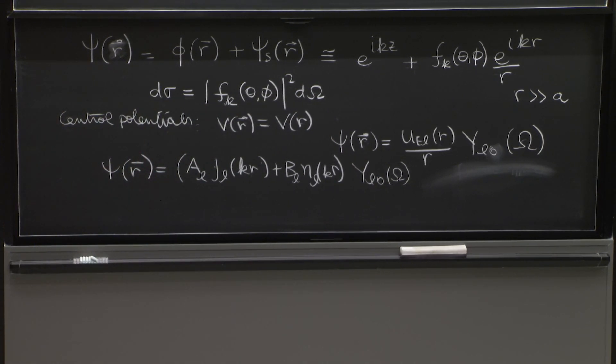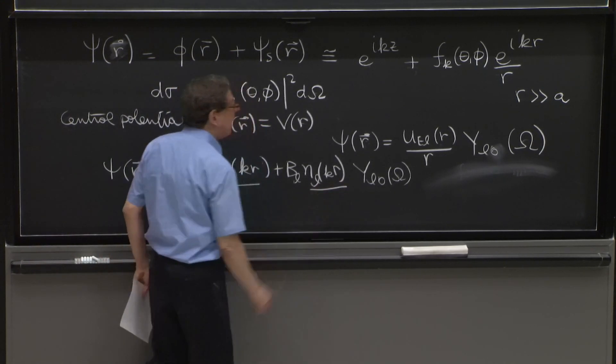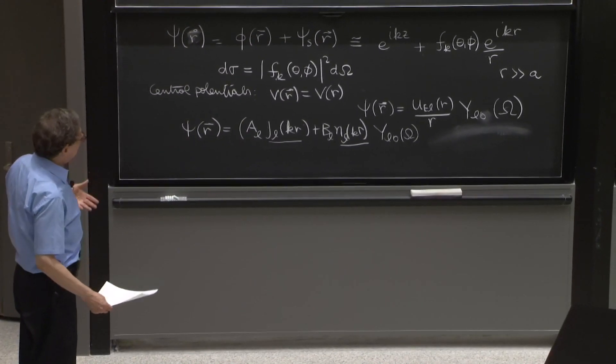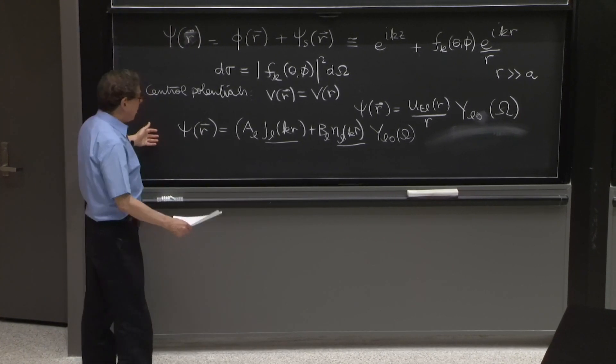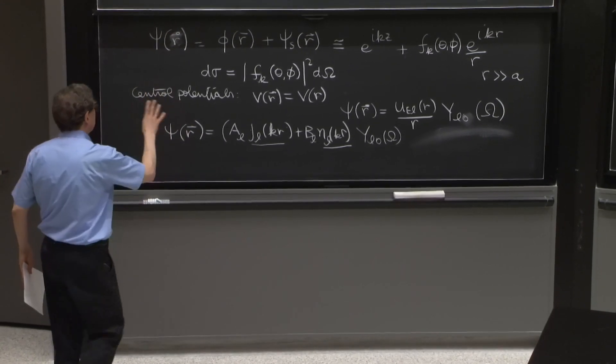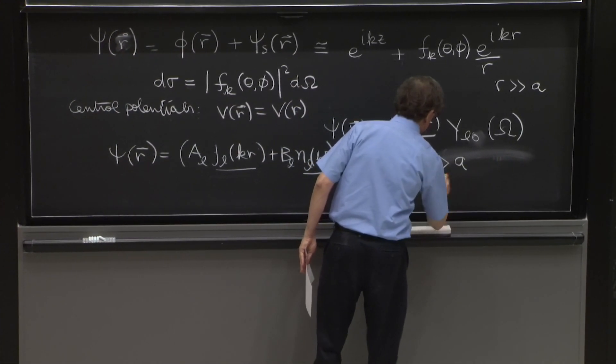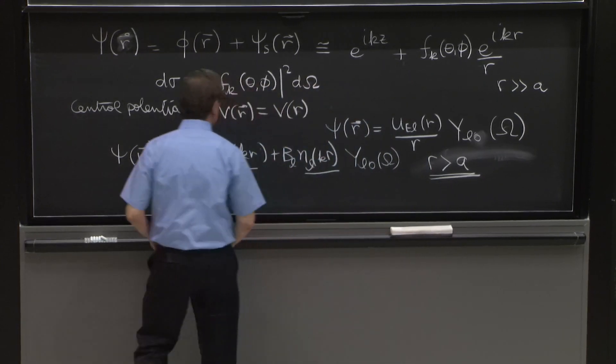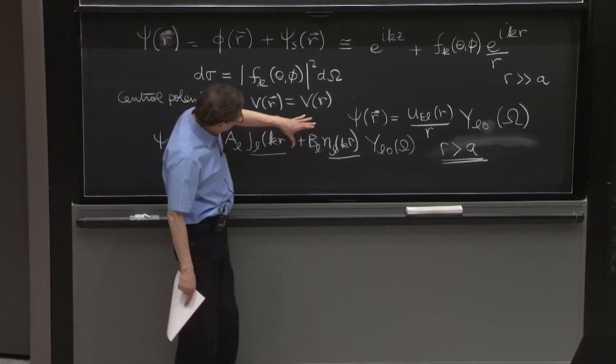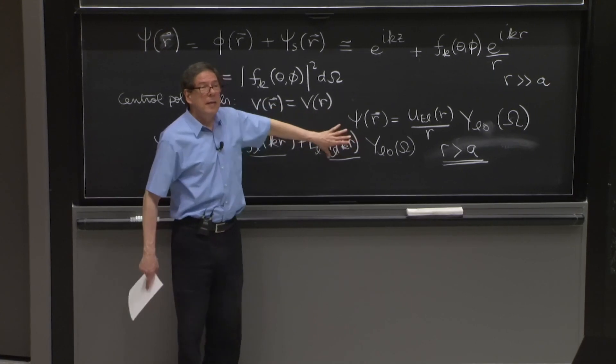These are the spherical Bessel functions. And those were solutions that are valid as long as you are away from the scattering center. So this is valid for R greater than A. Indeed, you know that this could not be valid all the way to the center of the part where the scattering is happening, because NL is divergent as R goes to 0. So this is not the solution.